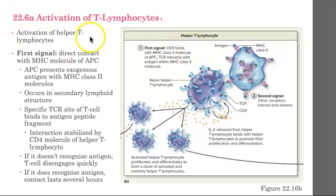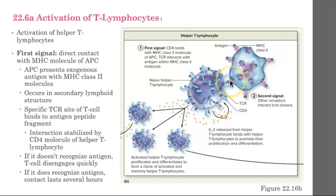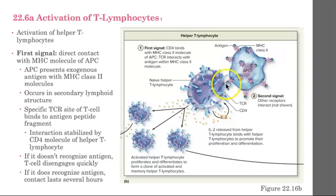Let's talk about how the activation process takes place during antigen challenge, using the helper T cell as our first example. The first signal occurs when there is direct contact between the MHC molecule of the antigen presenting cell and the T cell receptor. The antigen presenting cell took up the antigen and displayed it on its MHC molecule. At this point the helper T cell is naive. There is also an interaction with the CD4 protein taking place at the same time. If the naive helper T cell does not recognize this antigen, it is going to quickly disengage.